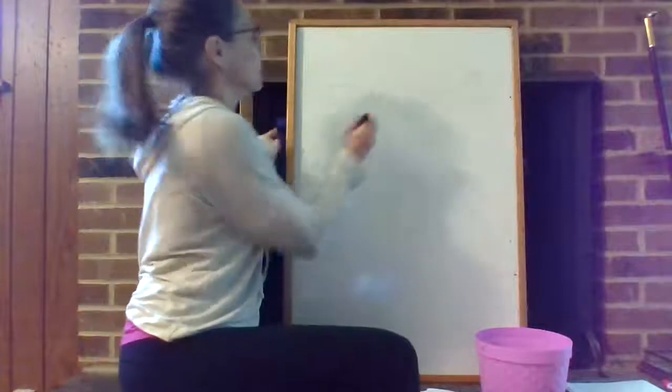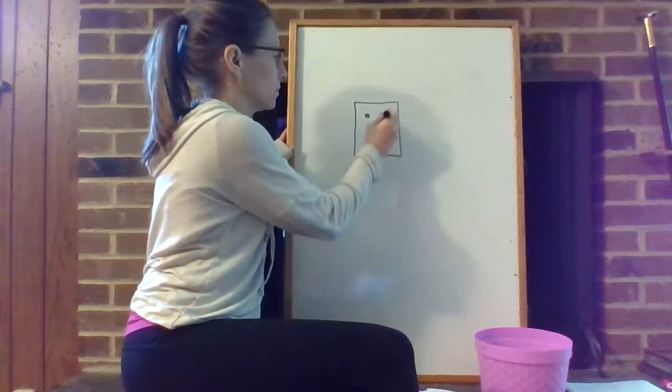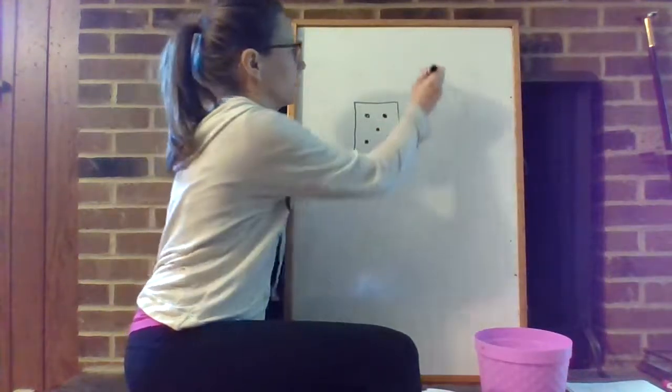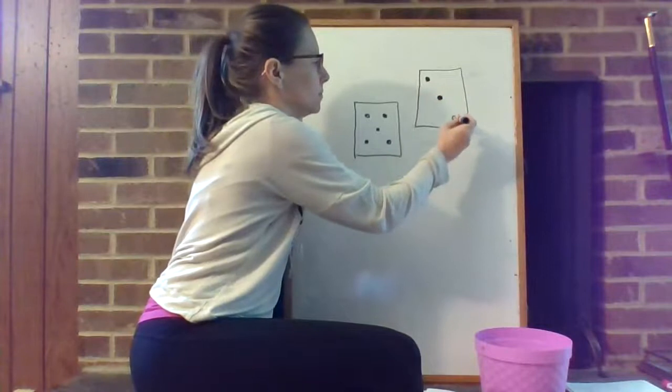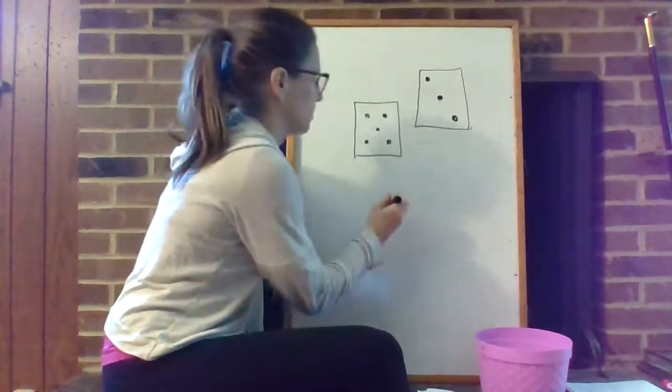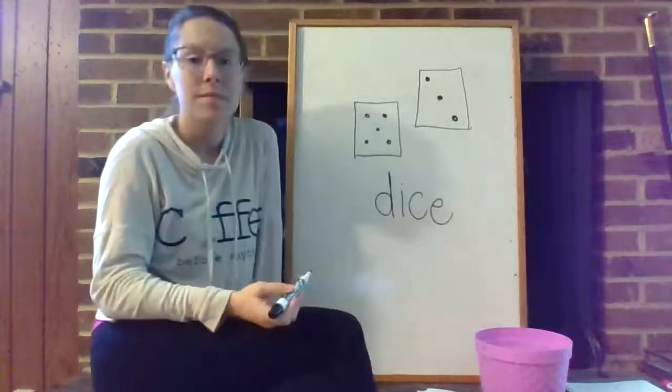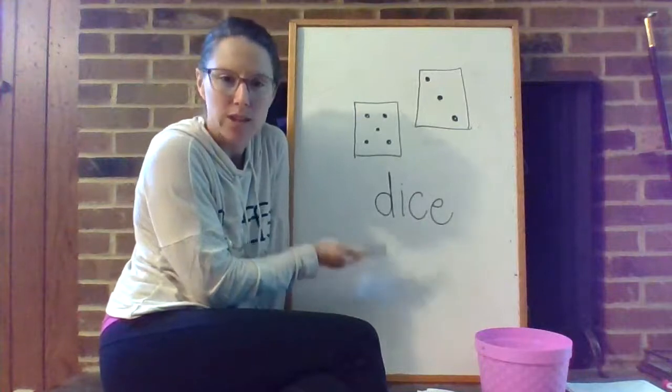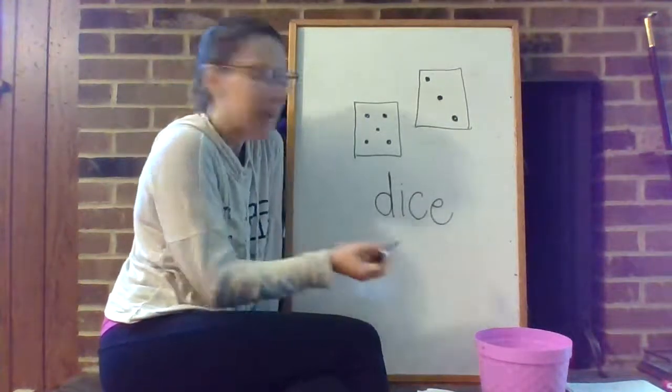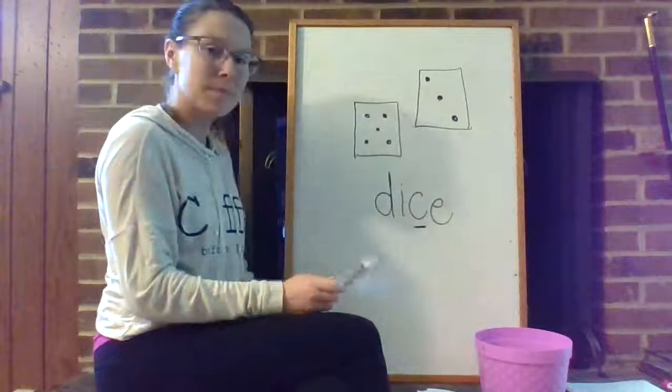Next one. I'm gonna start writing the word. Did you get dice? What did that word remind you of? Was it another word that we just had not too long ago? Yeah. Mice. And again, it had that S. And it was a C, not an S. So dice.